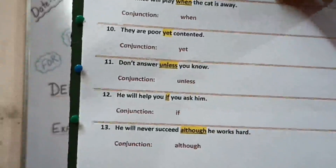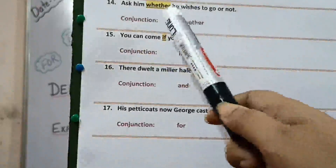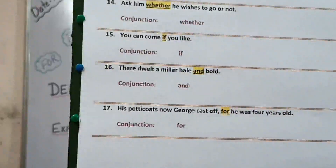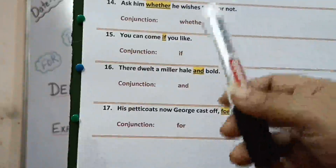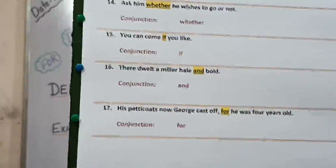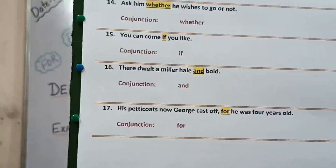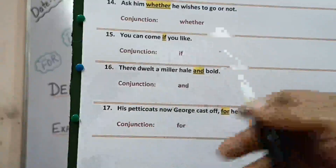Next, fourteenth part: ask him whether he wishes to go or not. Here there is another condition — whether he wants to go or not — so the conjunction is 'whether'. Fifteenth: you can come if you like, which I have already discussed in the example. Here 'if' is the condition, so the conjunction is 'if'.